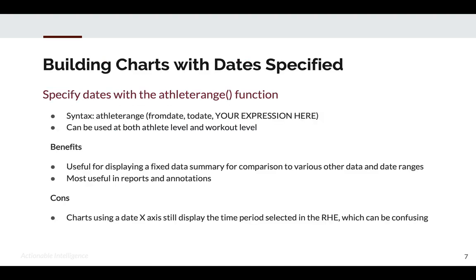The second way to choose dates to show on a chart or report is to use the athlete range function when building your data series. The format is actually pretty simple. You simply use the word athleterange as all one word, then a parenthesis, the from date (whatever you want to be the first date of your date range), the to date (whatever you want to be the end of your date range), and then your expression.